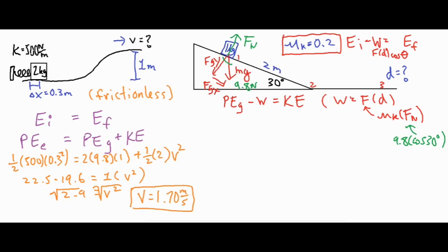We also use that 30-degree angle to find the height of the block, which is the vertical distance from the bottom of the incline to the very top. The block slides a diagonal distance of 2 meters — the hypotenuse of the triangle. Redrawing the triangle with a hypotenuse of 2 and angle of 30 degrees gives a 30-60-90 triangle, so the vertical side is 1 meter. Our height off the ground is 1 meter, and now we can set up all the numbers to find kinetic energy at the bottom of the ramp.